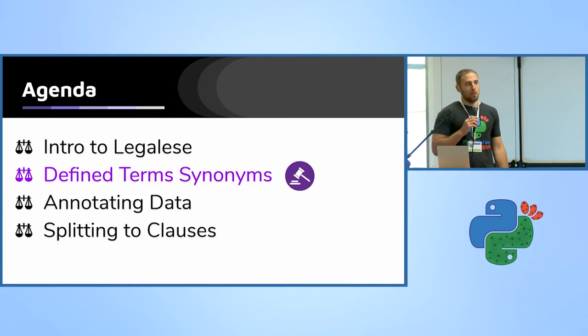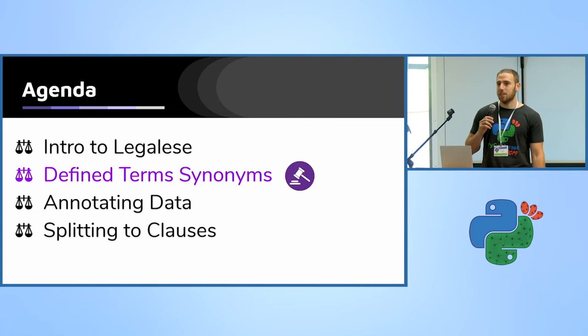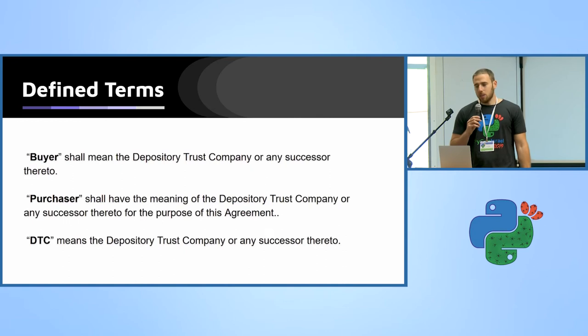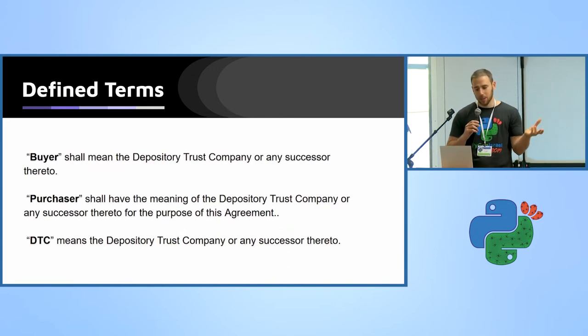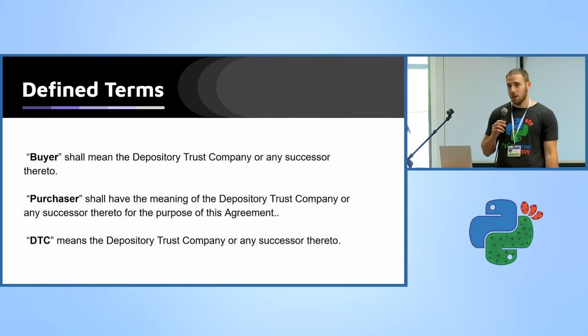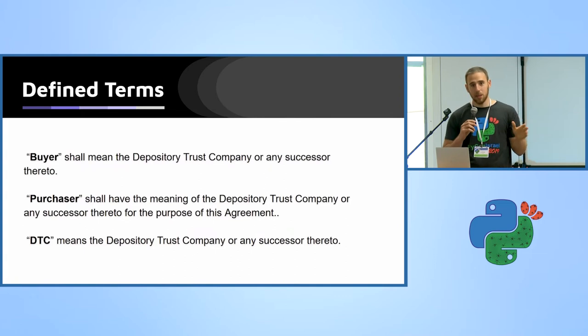Which brings us to our first use case, which is identifying synonyms in defined terms. So let's have a look at these three defined terms. Buyer shall have the meaning the Depository Trust Company and its successor, any successor thereto. Purchaser, almost same phrasing, shall have the meaning of same company or DTC, initials of the company also have the same meaning. Now this is a good point to stop and to say what problem is Best Practice actually solving.